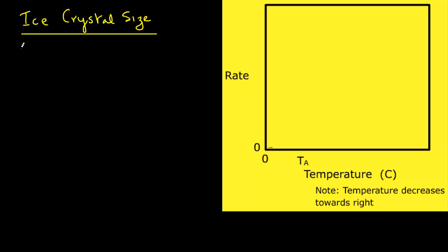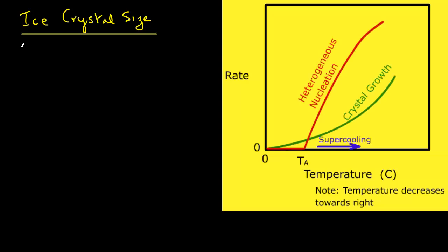Let's look at this figure where we have plotted rate on the y-axis and temperature on the x-axis, where the temperature decreases as you move from left to right. We begin the process at 0 degrees C and supercooling occurs as you move from left to right. There is a curve shown for crystal growth and there is a curve for heterogeneous nucleation which is shown in red.